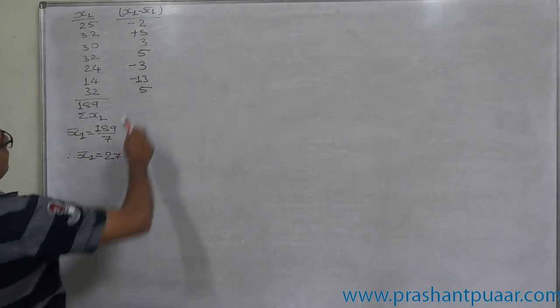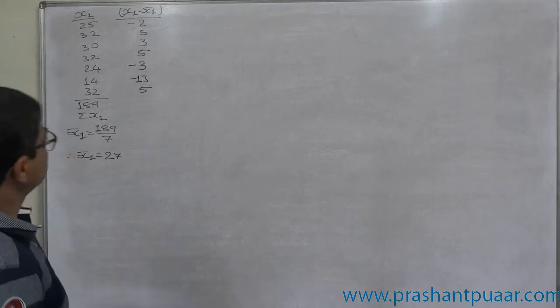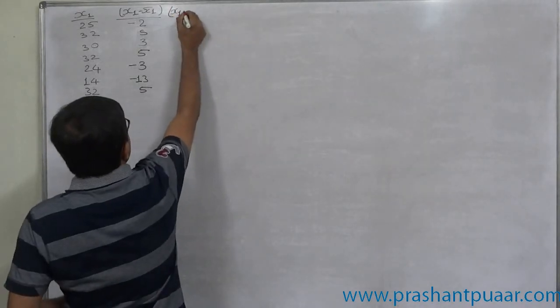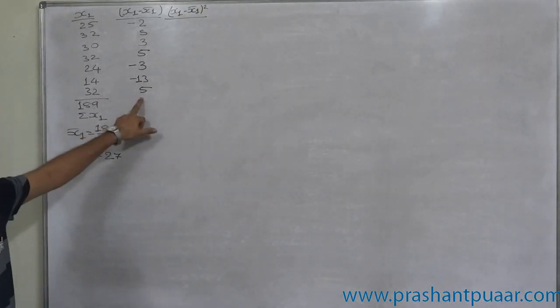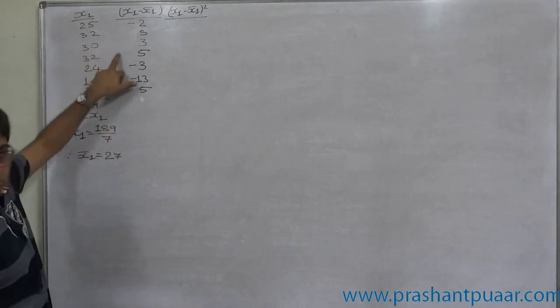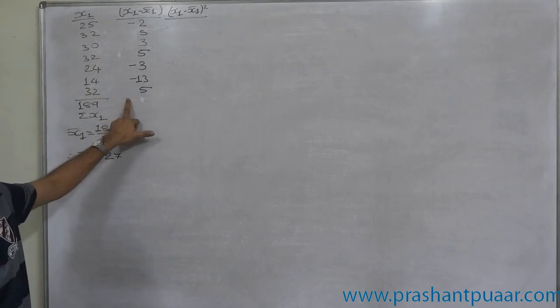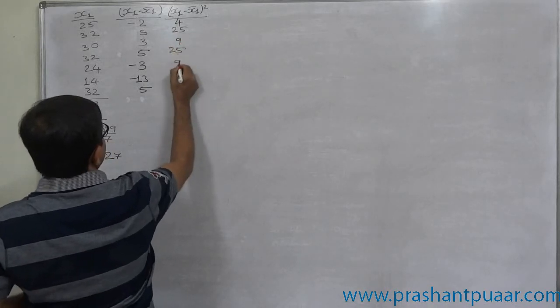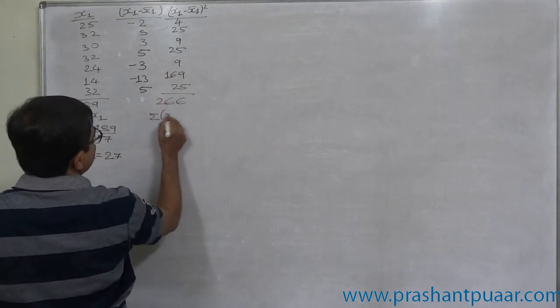Just verify that the summation of x minus x̄ is 0 or not, it must be 0. Positive numbers are 5, 3, and 5, 3 and 5, so it is 18. And negative numbers 16 plus 2 is 18, positive negative 18, 0. Then it is advisable to go for (x₁ - x̄₁)². It is not necessary to write the total of this column but always verify that it is 0 or not. The squared values are 4, 25, 9, 25, 9, 169, and 25, giving 266. This is Σ(x₁ - x̄₁)².